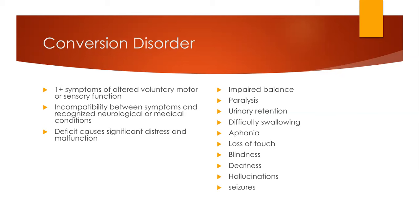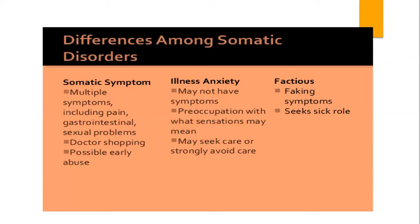This slide compares the different types of somatic disorders. Somatic symptom disorder and conversion disorder are when they actually have the symptoms. Illness anxiety disorder is when they're worried about developing symptoms. And the next thing we're going to talk about is factitious disorder, where they actually cause the symptoms on purpose.